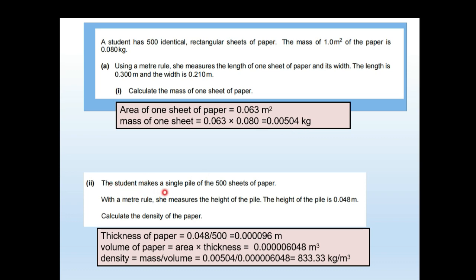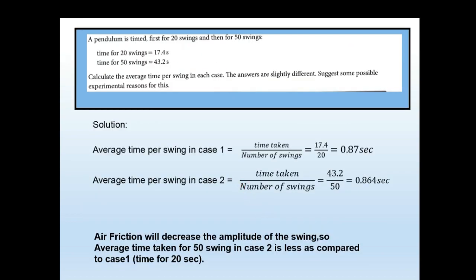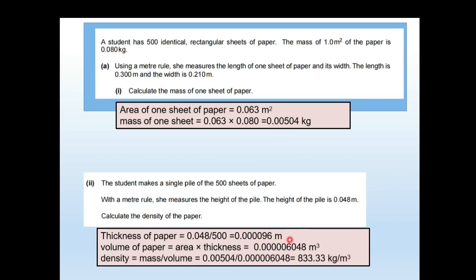The student makes a single pile of 500 sheets and measures the height of the pile as 0.048 meters. Dividing by 500 gives the thickness of 1 sheet as 0.00096 meters. Volume of the paper equals area × thickness = 0.063 × 0.00096 = 0.0000605 m³ (approximately 0.0000605 meter cube). Density equals mass divided by volume, giving 833.33 kilograms per meter cube.